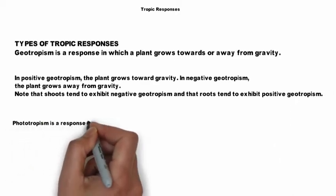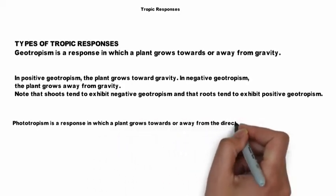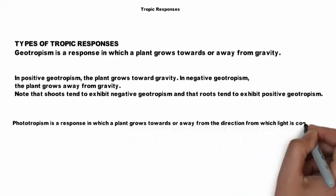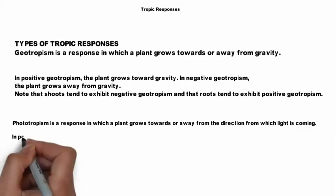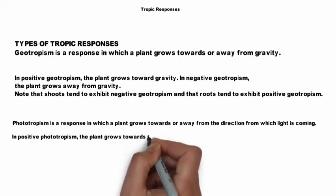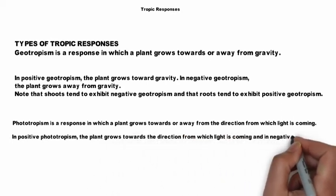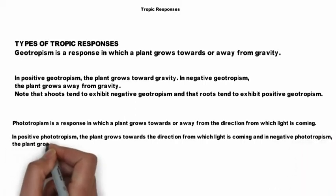Phototropism is a response in which a plant grows towards or away from the direction from which light is coming. In positive phototropism, the plant grows towards the direction from which light is coming and in negative phototropism, the plant grows away from this direction.